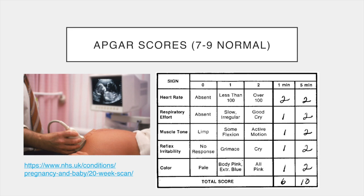Various scans are carried out during the in utero growth and development stages. At 12 weeks, there is a dating scan where the baby's due date is calculated, and a nuchal scan can be carried out to calculate the possible likelihood of Down syndrome. A scan at 20 weeks checks for 11 possible physical conditions in the baby. There is a link on the slide to the NHS website that leads to more information about ultrasound scanning during pregnancy.